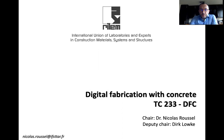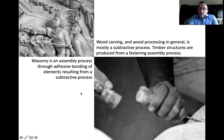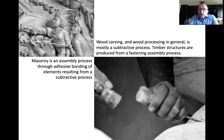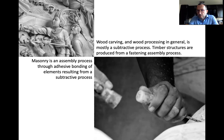I'd like to start with these pictures. Often we don't consider much the way these things were produced or shaped. Wood carving and wood processing in general is mostly a subtractive process — you take a piece of wood and extract material until you reach the desired shape. Timber structures are often produced from a fastening assembly process, a non-permanent assembly process. Masonry, on the other hand, is an assembly process through adhesive bonding of elements resulting from a subtractive process — the stones obtained by extracting material from a piece of stone.